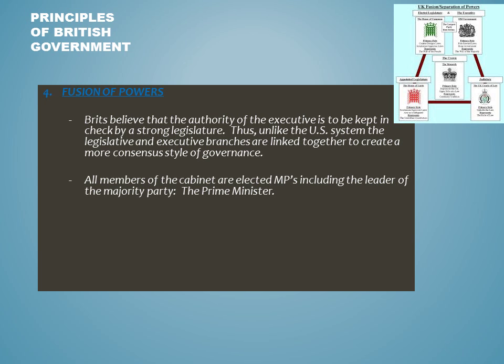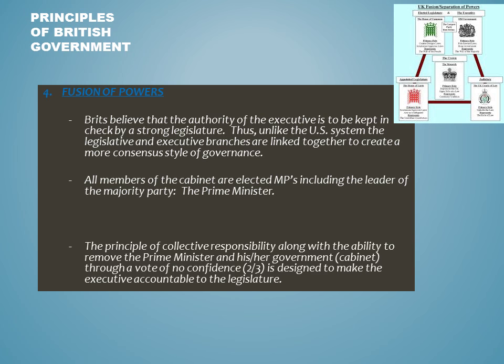The fourth and final principle of British democracy is the concept of fusion of powers, which is a stark contrast from the American system of separation of powers. Under the British system, the executive and legislative branches fall together under a blanket system in which they are forced to work together to get policymaking through. The hope is that it creates a more consensus style of governance and less frustration and gridlock. All members of the executive branch, including cabinet members, are also elected MPs from the House of Commons, including the leader of the majority party, the Prime Minister. However, make no mistake that it is Parliament who will hold more authority than the Prime Minister and his or her cabinet.